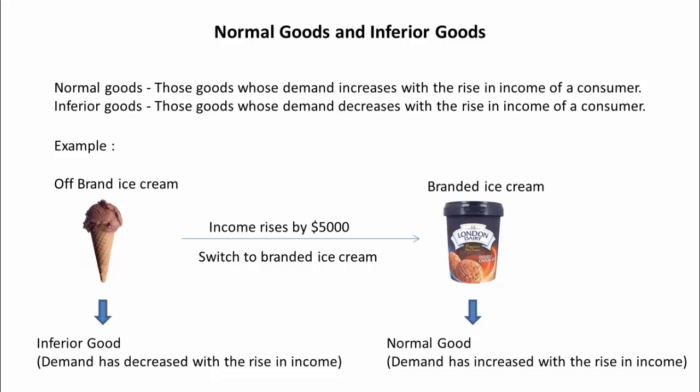So in this case, we may call off-brand ice cream an inferior good, as its demand has decreased with the rise in your income, and branded ice cream a normal good, as its demand has increased with the rise in your income.